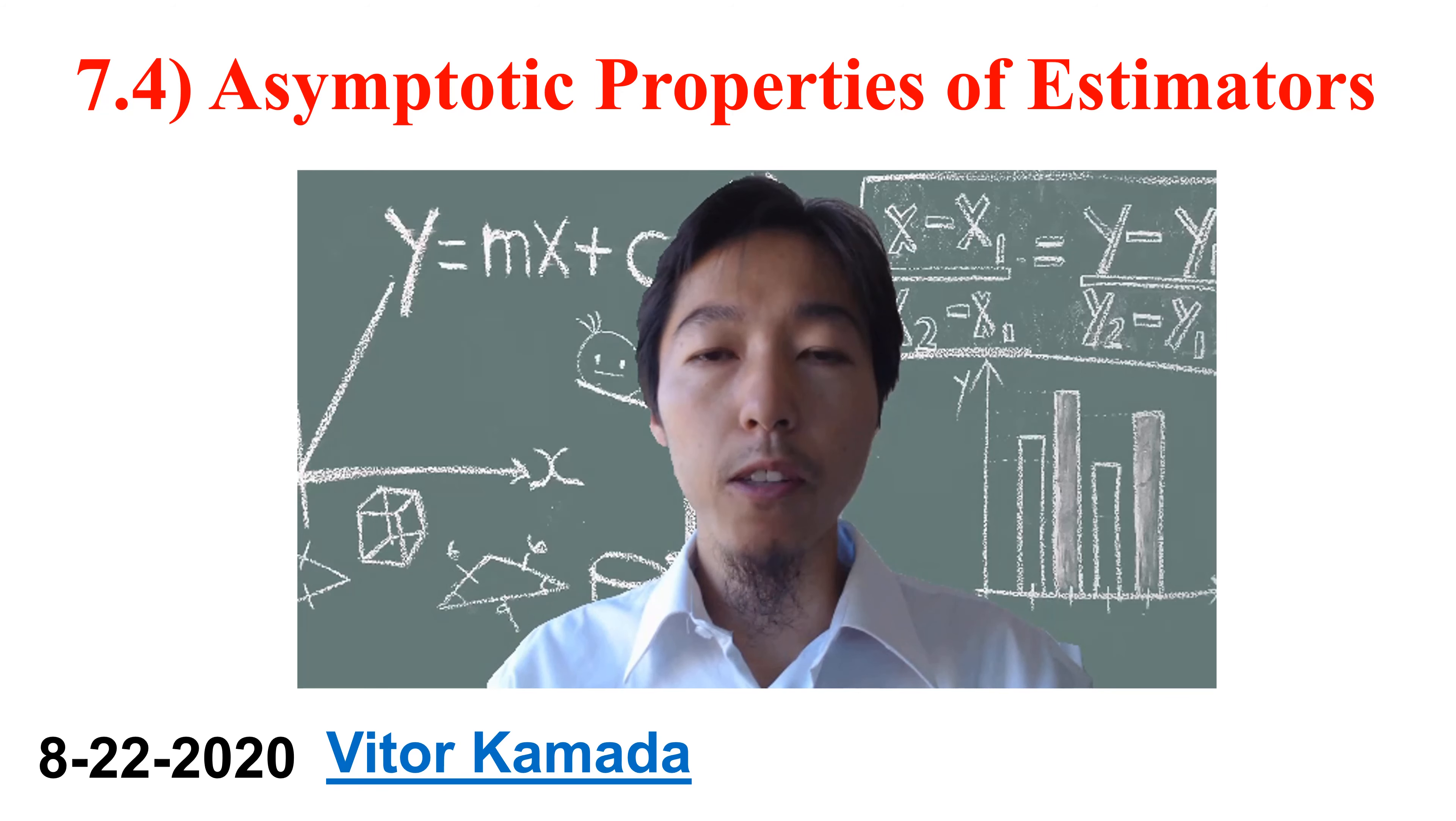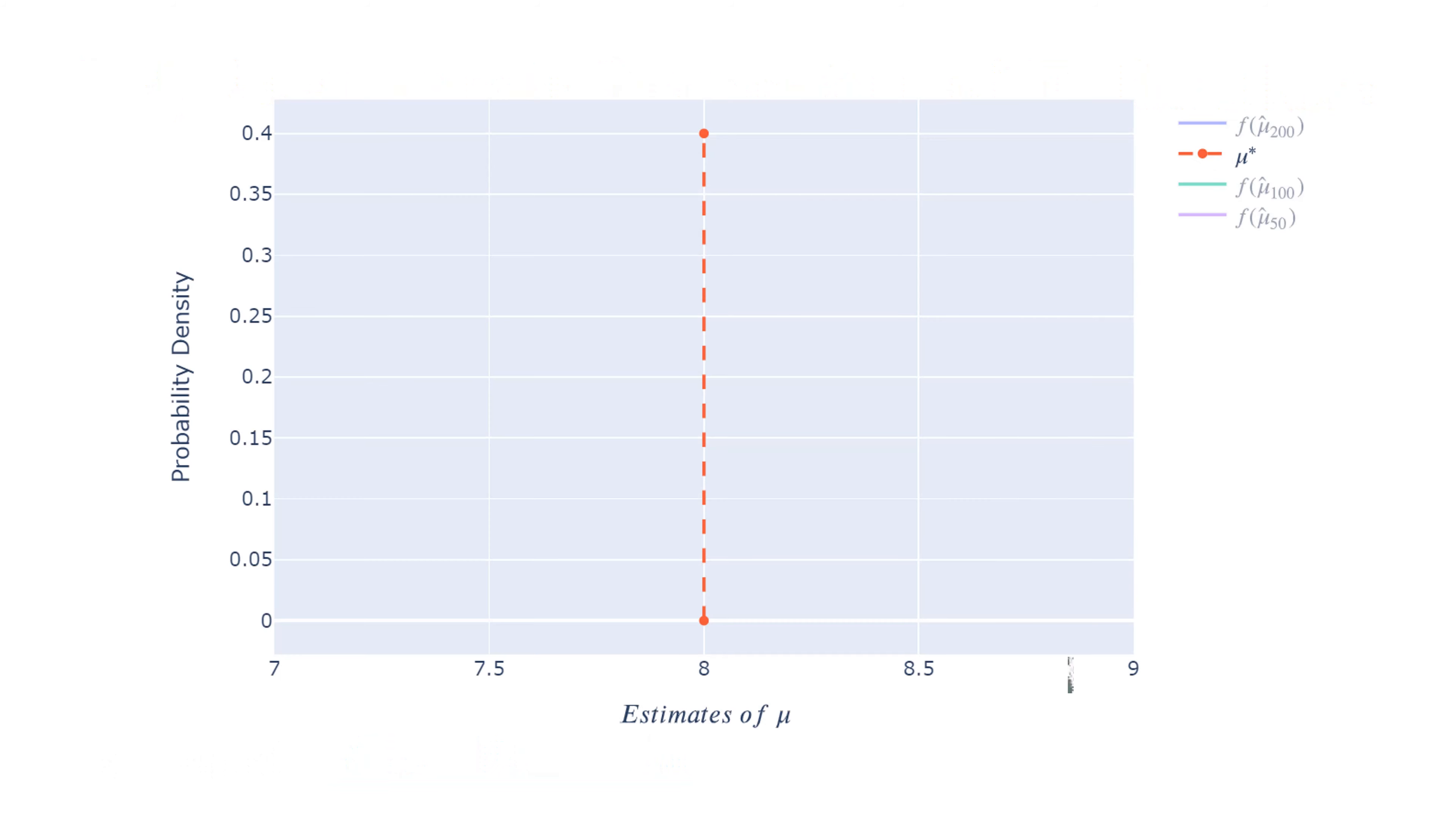In this video, I will give the intuition about the asymptotic properties of the estimators. Let's assume a parameter of the population, mu star, that is this red vertical line, centered on 8.